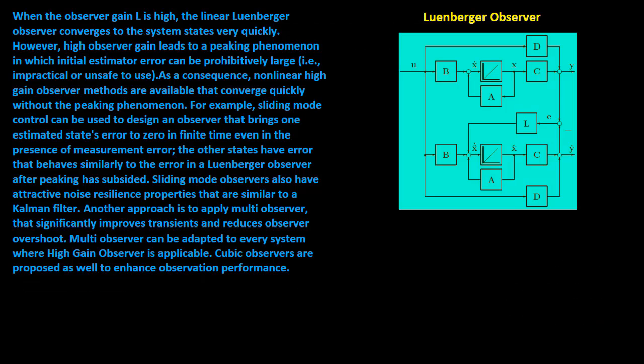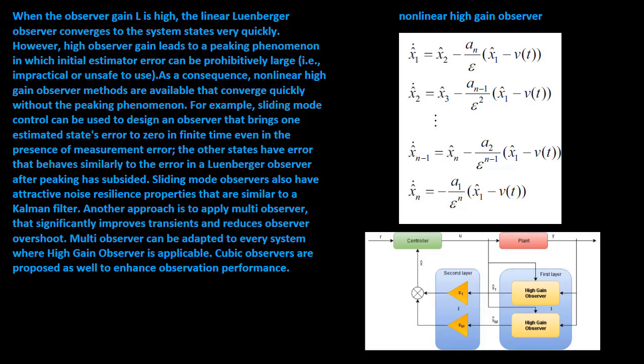When the observer gain L is high, the linear Luenberger Observer converges to the system states very quickly. However, high observer gain leads to a peaking phenomenon, in which initial estimator error can be prohibitively large.